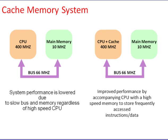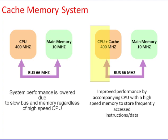Cache memory is local high-speed memory that provides a primary pool of reusable instructions and data accessed more frequently by the processor, saving time otherwise wasted fetching from main memory. For example, with a CPU at 400 MHz, main memory at 10 MHz, and bus speed of 66 MHz, system performance is lowered due to the slow bus and memory. Performance is improved by accompanying the CPU with high-speed cache memory to store frequently accessed instructions or data.